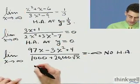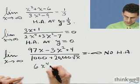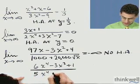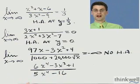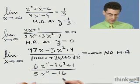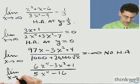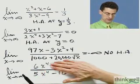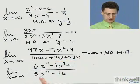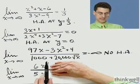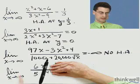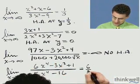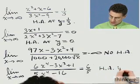Let me do one last example: 6x to the 4th minus 3x cubed plus 1, divided by 5x to the 4th minus 16. To find the horizontal asymptotes, I take the limit as x goes to infinity. The highest power in the numerator is 6x to the 4th, and in the denominator it's 5x to the 4th. Those powers are equal, so I cancel them away, and I'm left with 6 fifths. So there is a horizontal asymptote at y equals 6 fifths.